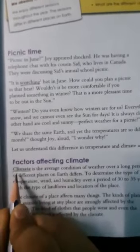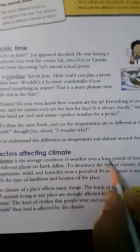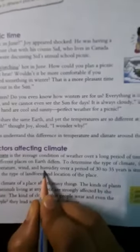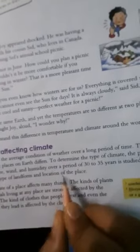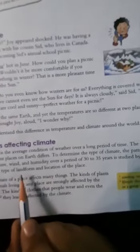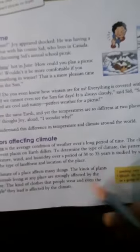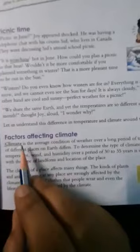So factors affecting climate. What is climate students? C-L-I-M-A-T-E. Climate is the average condition of weather over a long period of time. The condition of weather which is over a long period of time, that is the climate. So the climate pattern of different places on earth differs. The climate is different on different places of the earth. To determine the type of climate, the pattern of rainfall, temperature, wind, humidity over a period of 30 to 35 years is studied by scientists along with the type of landforms and location of the places. So on the landforms and different types of locations, the temperature and climate are also different. These things affect the climate.